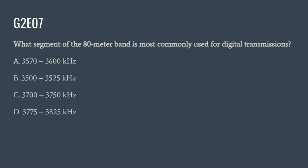G2E07: What segment of the 80 meter band is most commonly used for digital transmissions? A. 3570 to 3600 kHz. B. 3500 to 3525 kHz. C. 3700 to 3750 kHz. Or D. 3775 to 3825 kHz. The correct answer is A: 3570 to 3600 kHz.